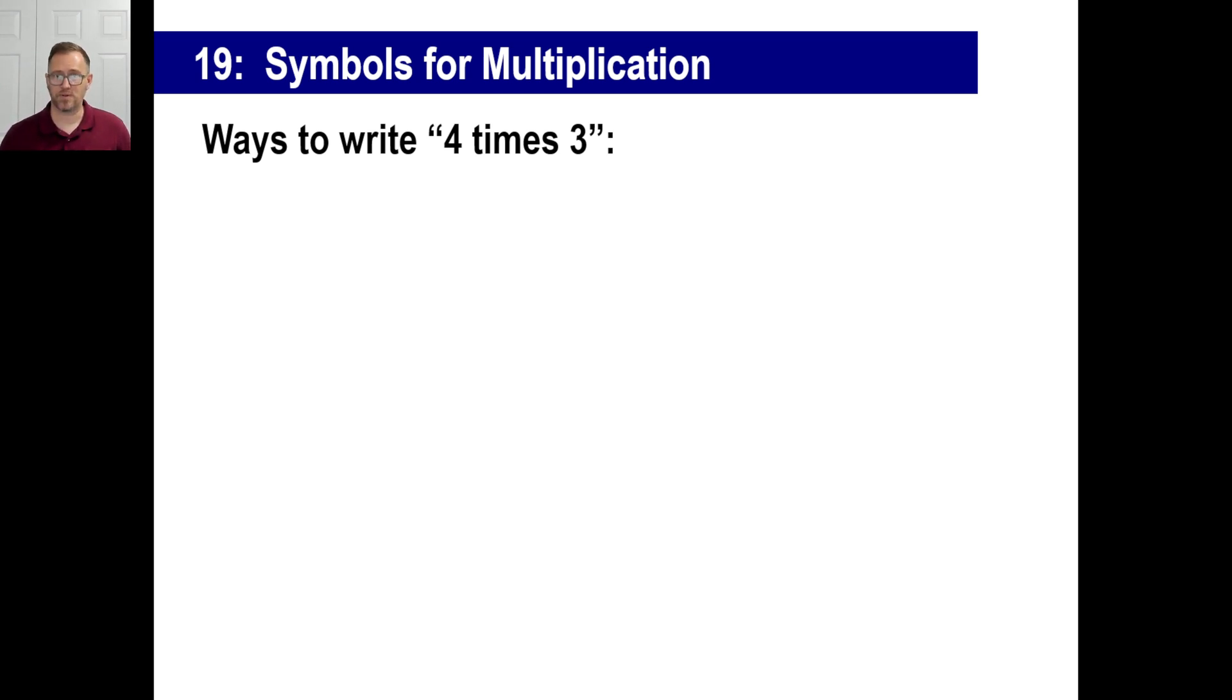So in algebra, there are a number of ways to write 4 times 3. We used to do it this way, but the x's will get confusing, so you need to break out of that habit and start using dots. So 4 times 3 is one example. Another thing you can do, you can just say 4 times 3 like this is okay. Or you could go 4 times 3. You might even go both of those with parentheses or whatever. Anytime you see parentheses, you're talking about multiplication. So just several ways to write multiply.